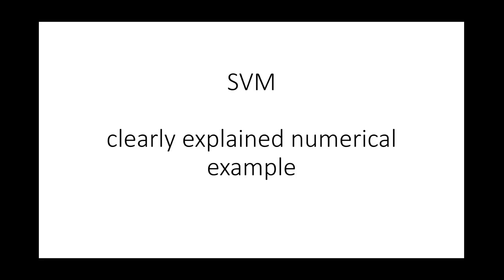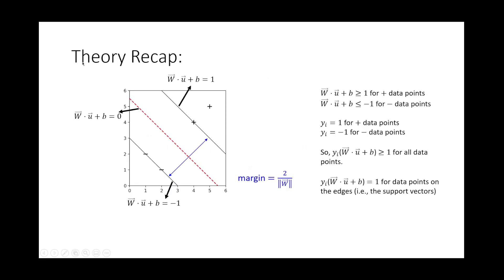In this video I'm going to show you one clear explained numerical example for SVM — Support Vector Machines. Let's do some theory recap first. You've probably seen this particular plot or something similar in your lecture slides or textbook. We have a hyperplane which can be represented by the vector w dot vector u — some people use x, I just use u — plus b equals zero.